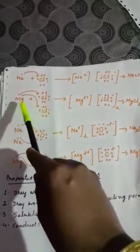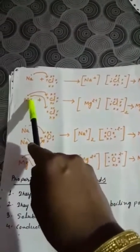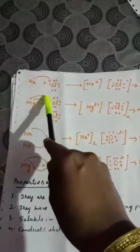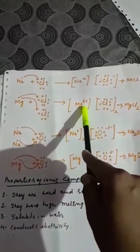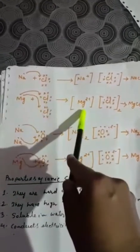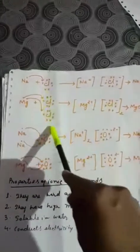Magnesium gives one electron to one chlorine and another electron to another chlorine, so magnesium becomes two positive because it is giving two electrons. Each chlorine takes one electron so it is single negative, but there are two chlorines, so you multiply by two — giving MgCl2. Now consider sodium oxide: the formula is Na2O. Sodium has one electron in its outer shell and oxygen has six, so oxygen can take two.